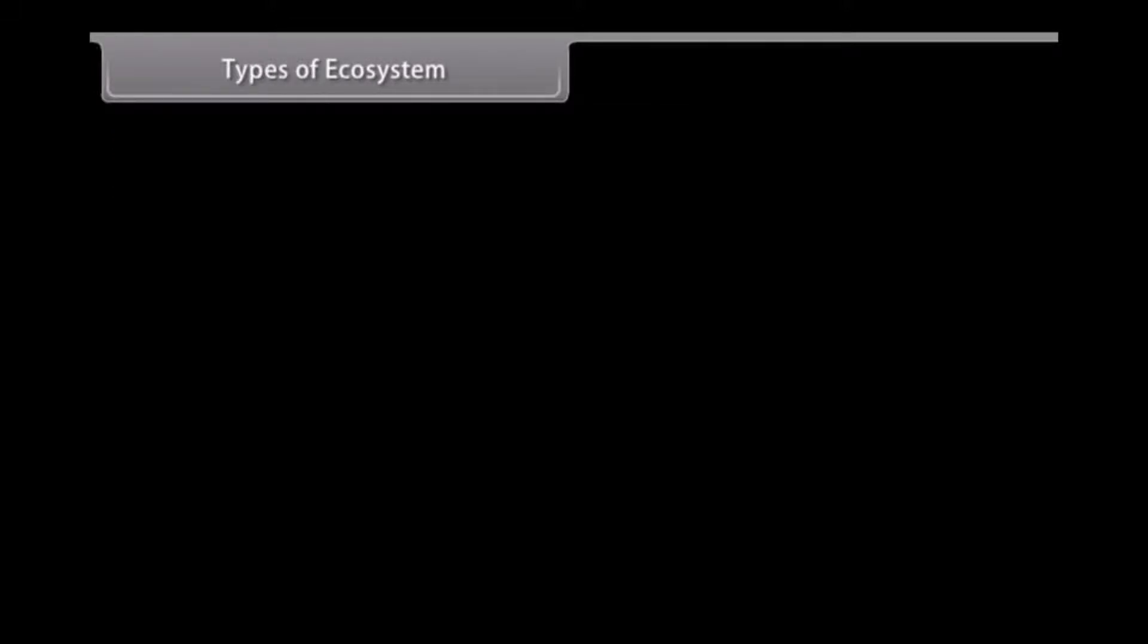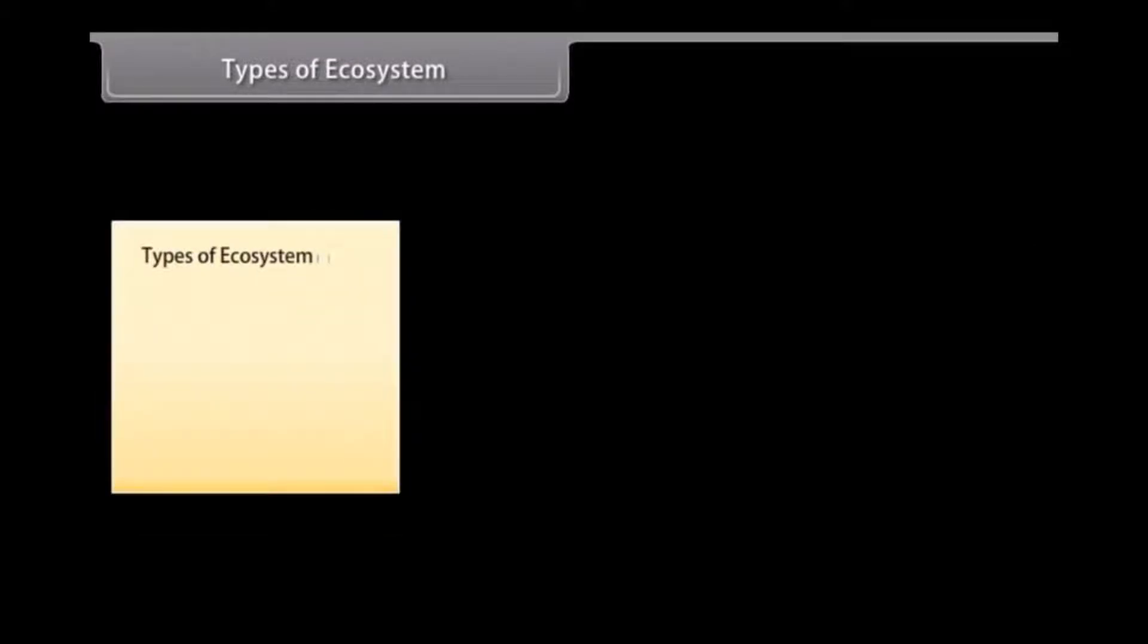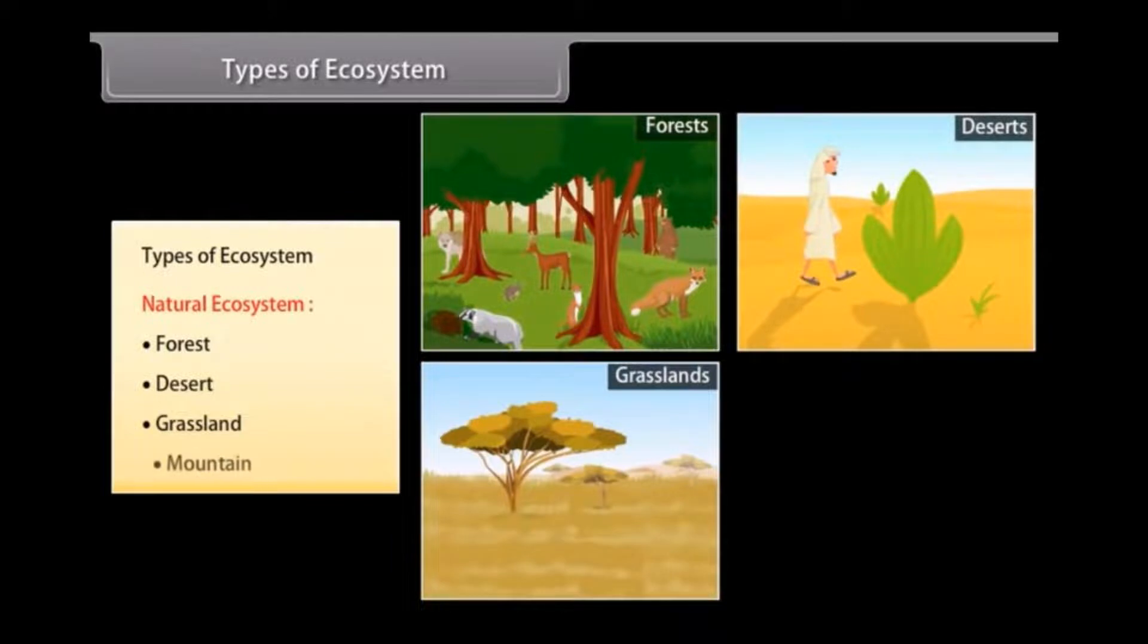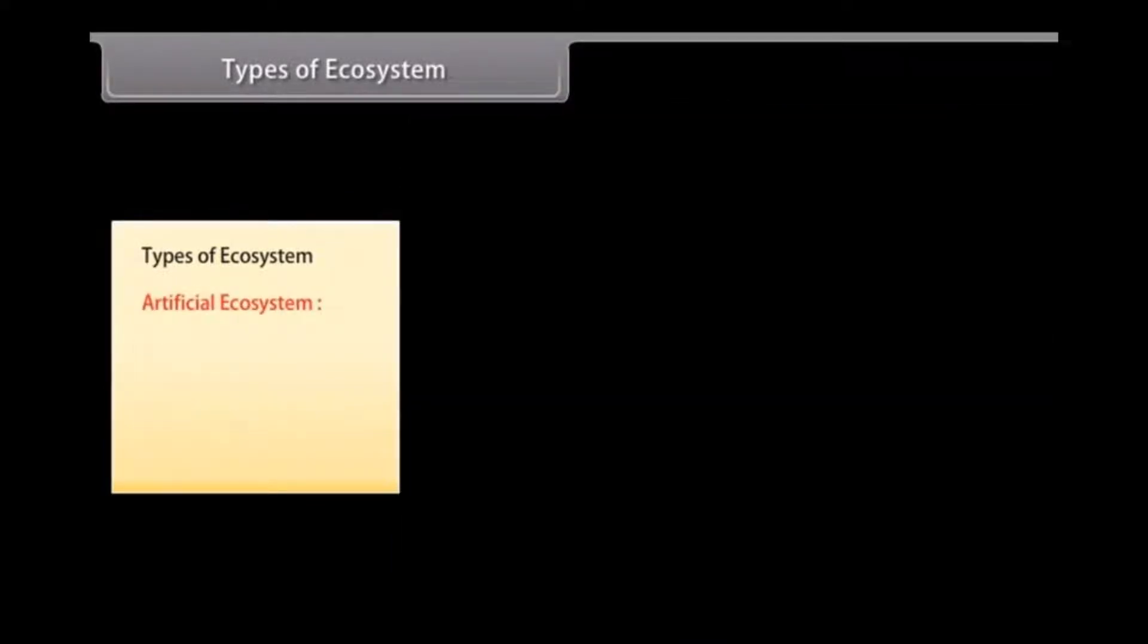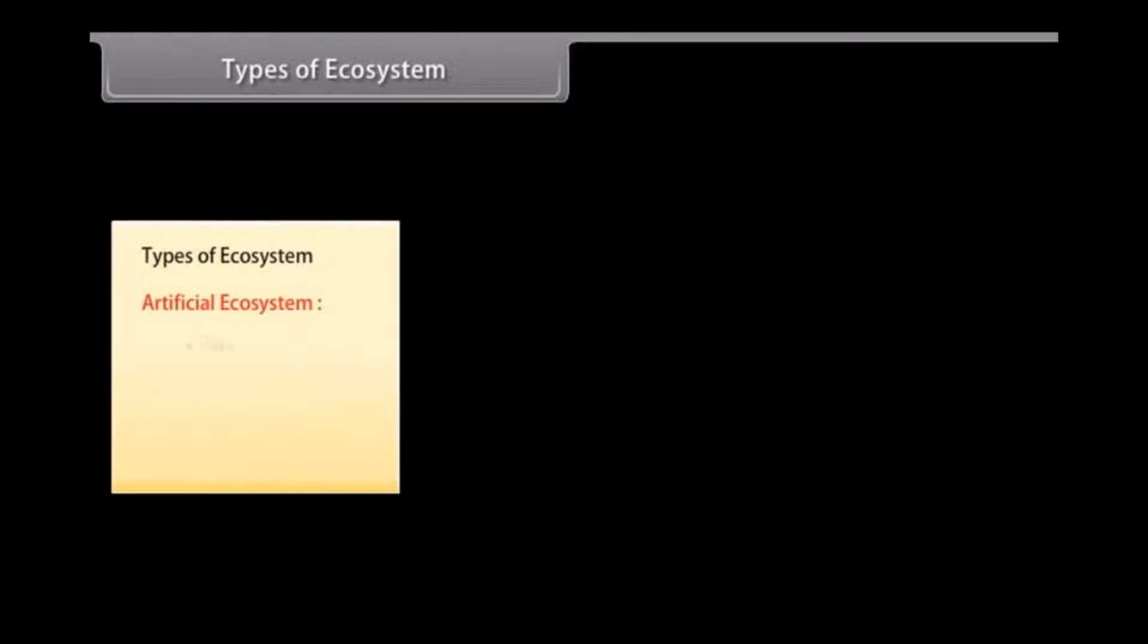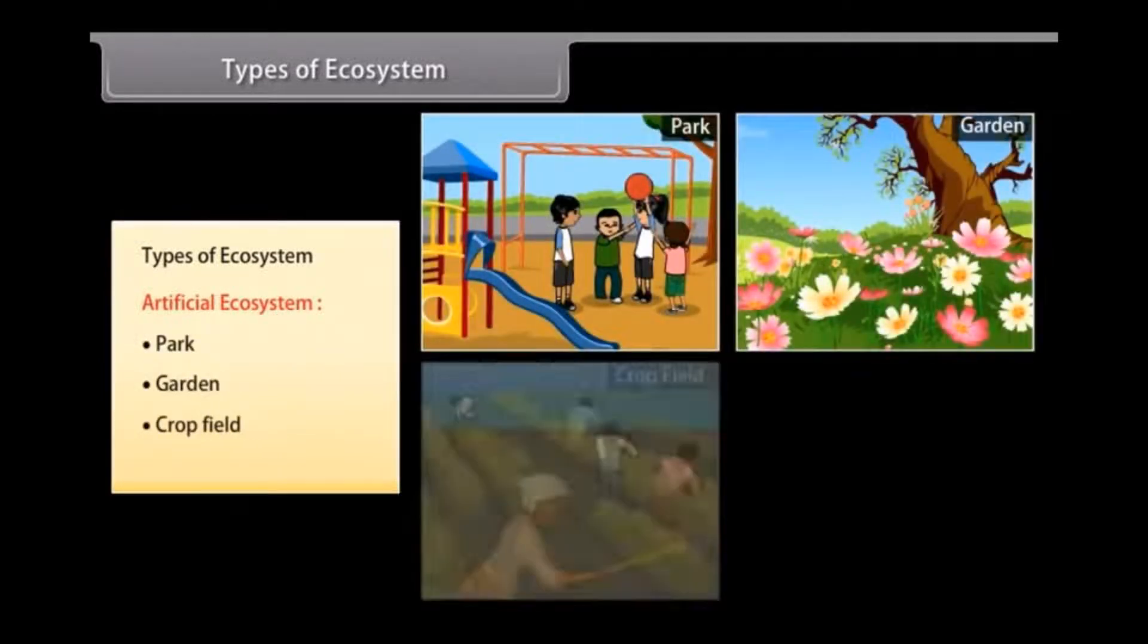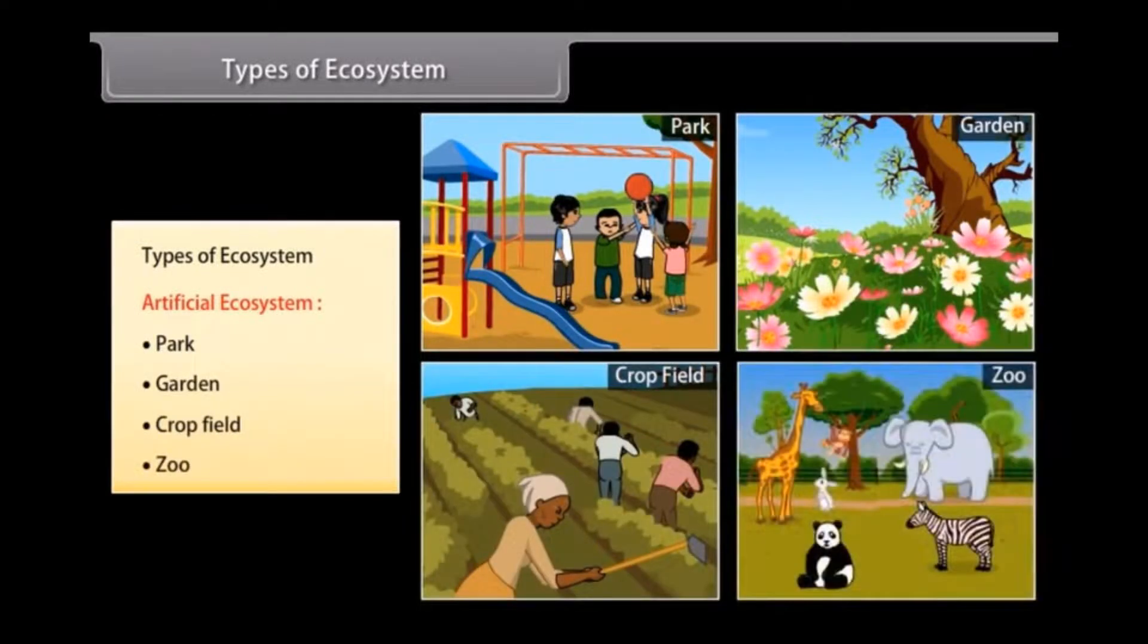Types of ecosystem. There are two different types of ecosystems. They are natural ecosystem in which we have forests, deserts, grasslands, mountains, etc., and artificial ecosystem in which, example, parks, gardens, crop fields, zoo, etc. exist.